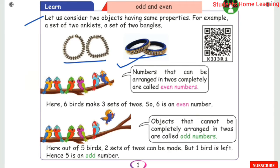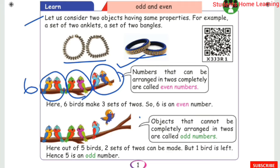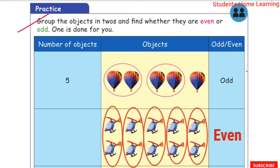Numbers that can be arranged in twos completely are called even numbers. Here are the birds that can be arranged in a 2-2 arrangement: 1, 2, 3. Numbers that cannot be fully arranged in twos are called odd numbers.